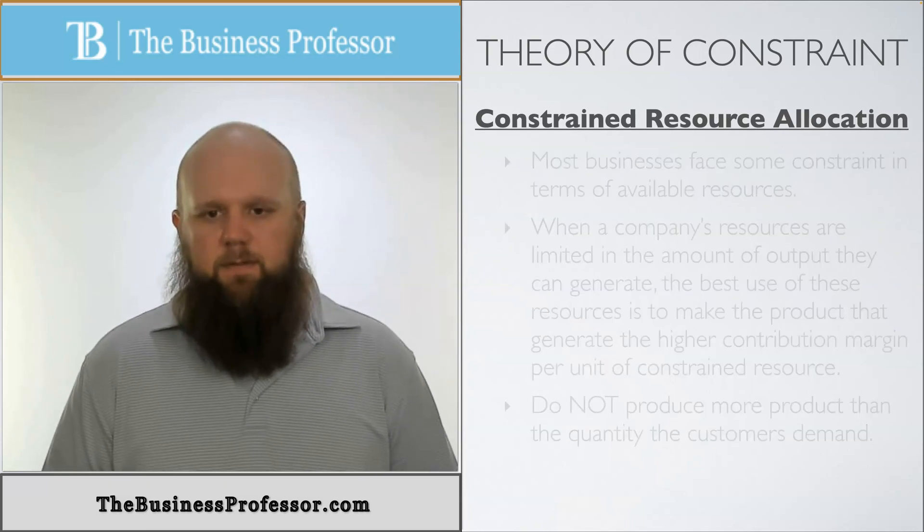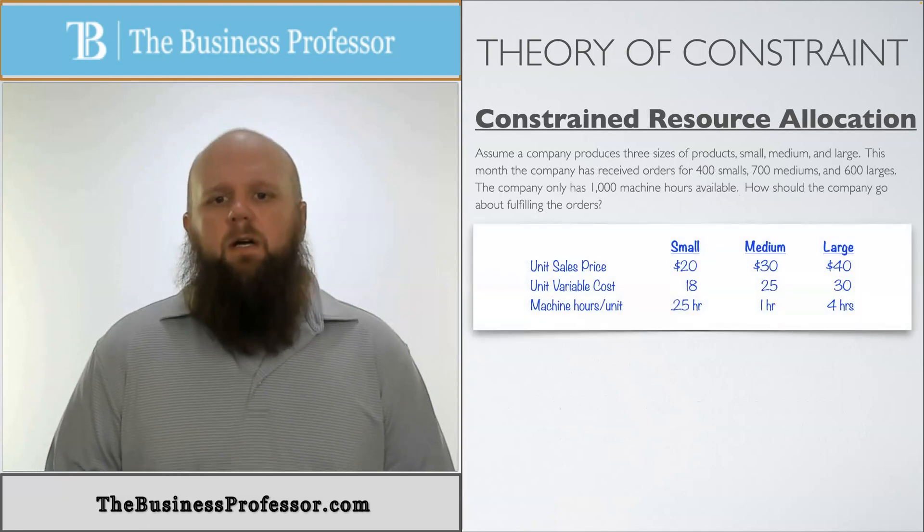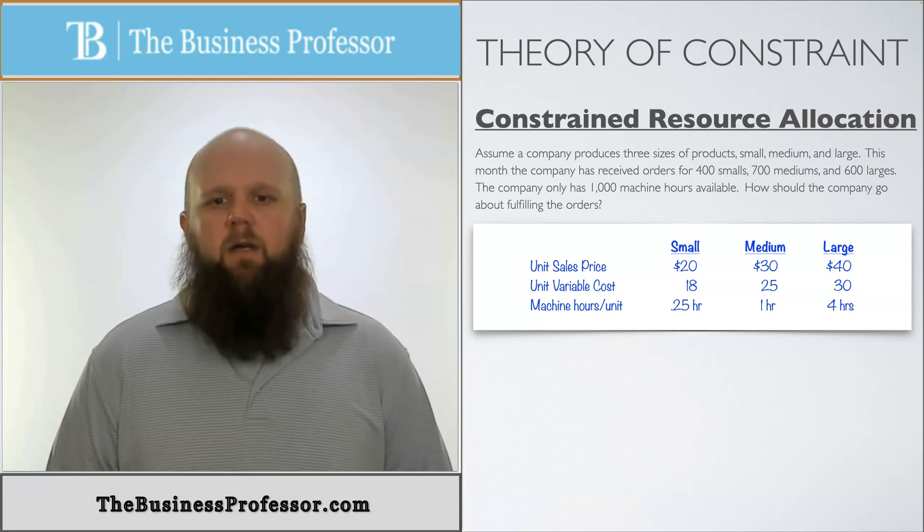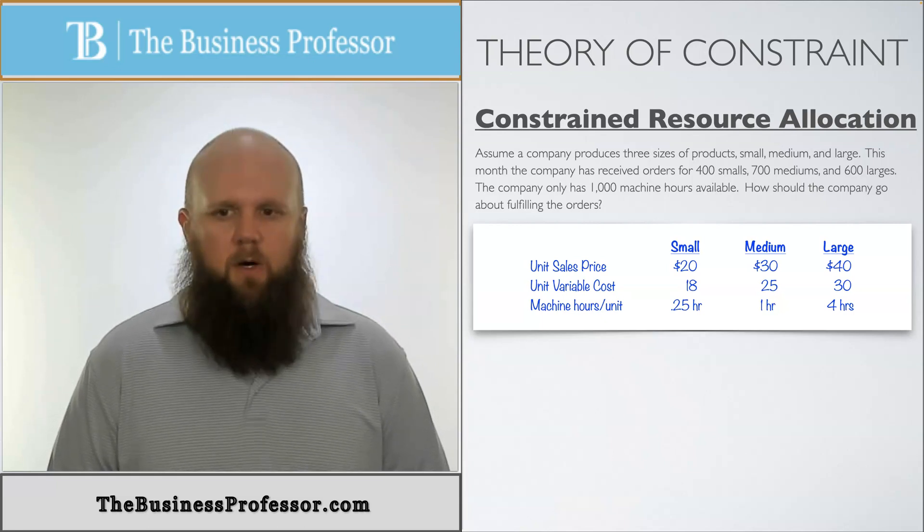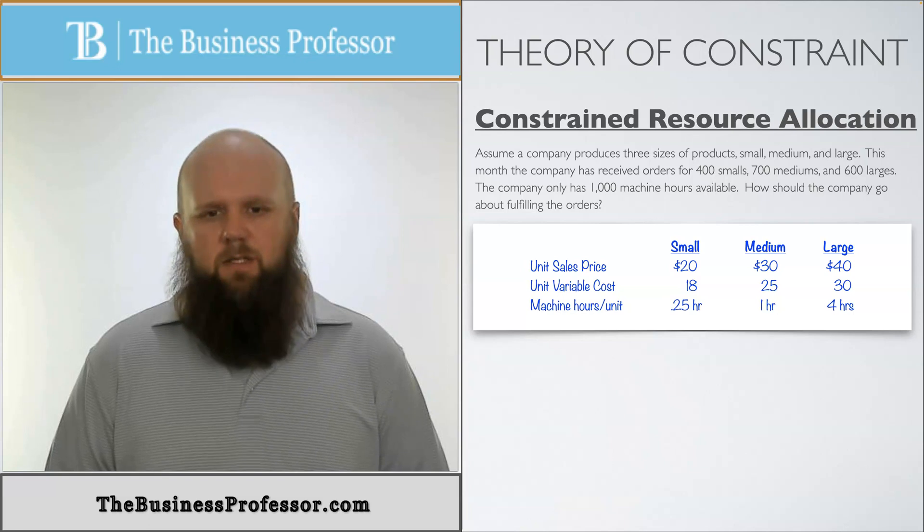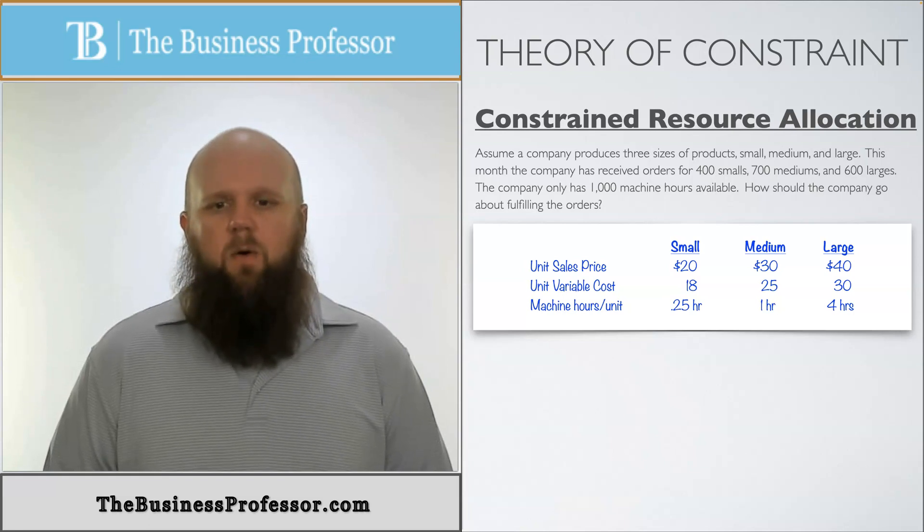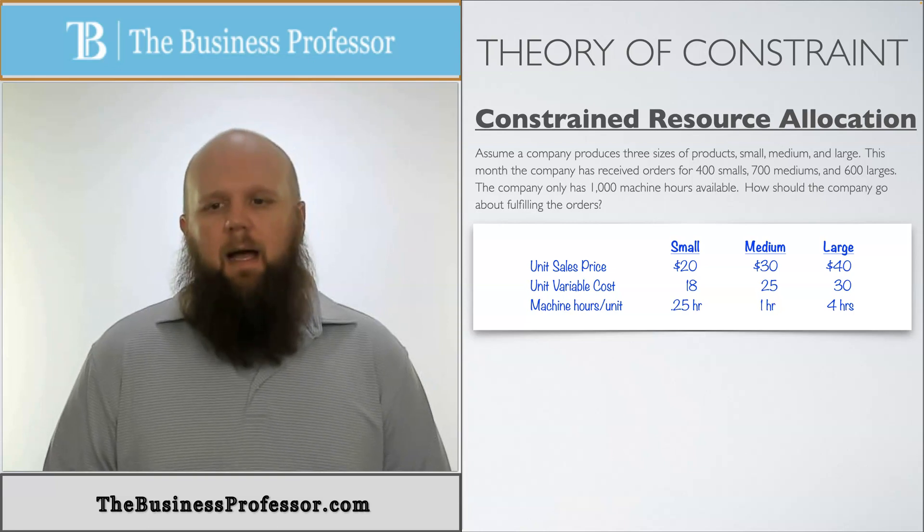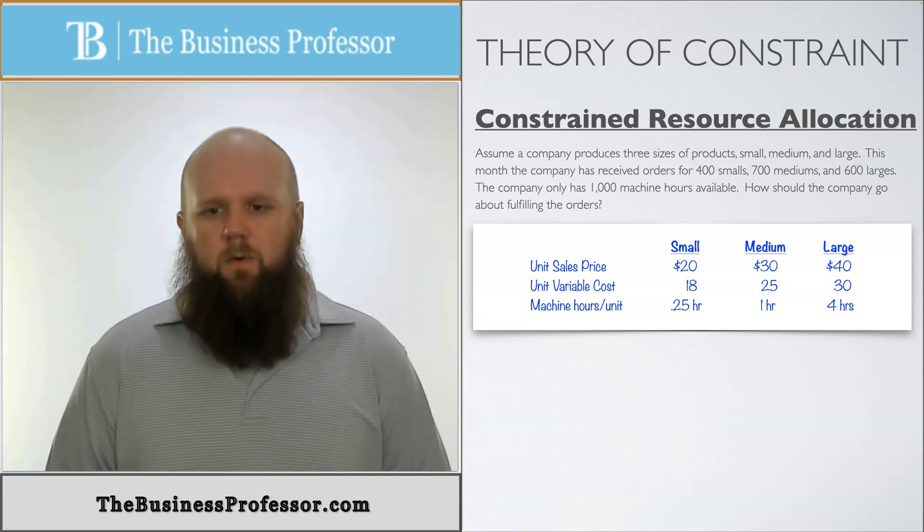So let's look at an example of this. Assume a company produces three sizes of products: small, medium, and large. This month, the company has received orders of 400 small, 700 medium, 600 larges. The company only has 1,000 machine hours available. There's our constrained resource. How should a company go about fulfilling the order?